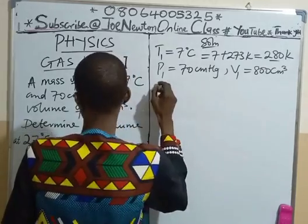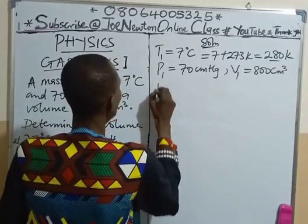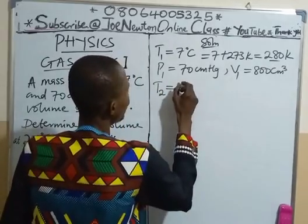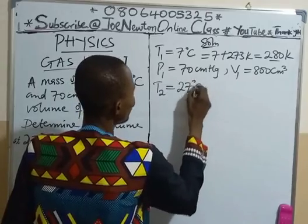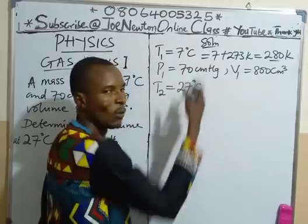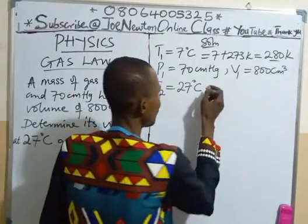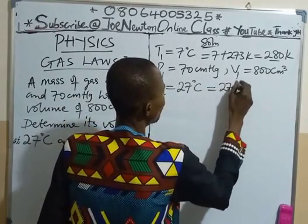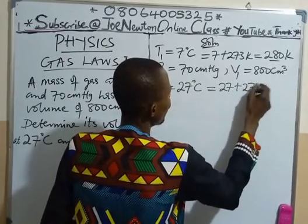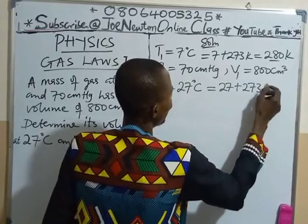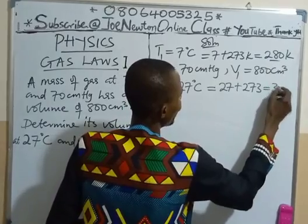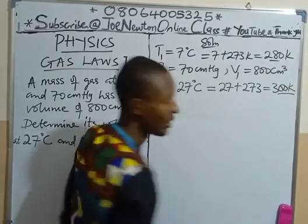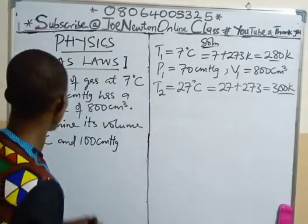We are now given that T2, the final temperature, is 27 degrees Celsius. We do the same thing — we convert to Kelvin: 27 plus 273 Kelvin, which gives us 300 Kelvin. Not degree Kelvin, just Kelvin.